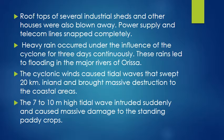Rooftops of several industrial sheds and other houses were also blown away. Power supply and telecom lines snapped completely. Heavy rain occurred under the influence of the cyclone for three days continuously. These rains led to flooding in the major rivers of Odisha.